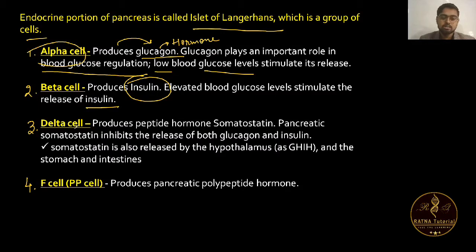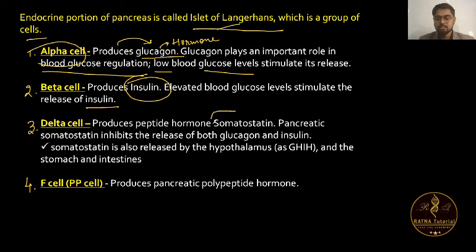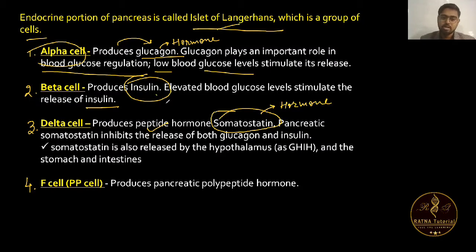The third type of cell in the Islets of Langerhans is the delta cell. Delta cells produce a peptide hormone called somatostatin, which is also a hormone.